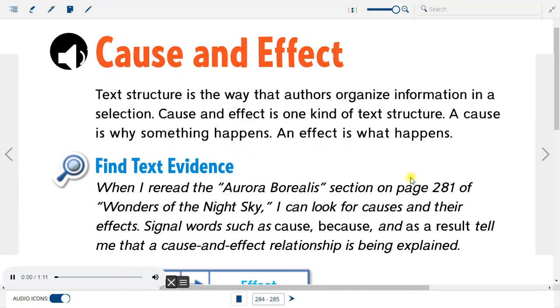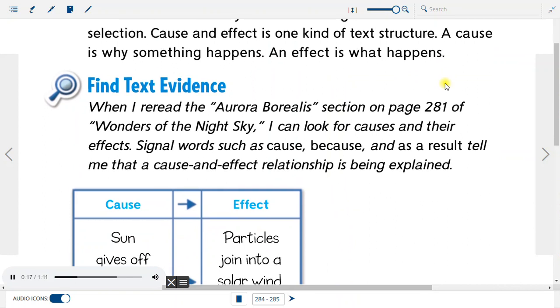Cause and Effect. Text structure is the way that authors organize information in a selection. Cause and Effect is one kind of text structure. A cause is why something happens. An effect is what happens.